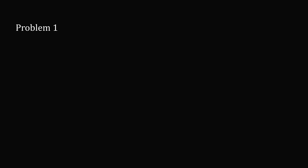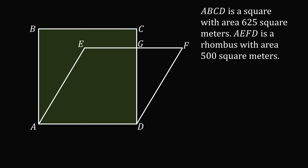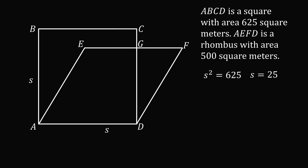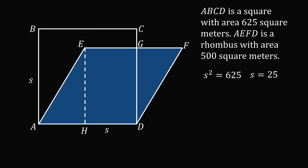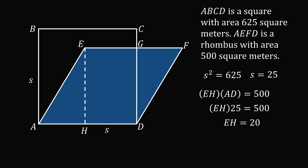Let's solve Problem 1. Suppose the square ABCD has a side length equal to S. So AD = AB = BC = CD = S. Then S squared equals 625, meaning S equals 25. In the rhombus, construct the height EH upon the side AD. The area of the rhombus equals EH times AD, which equals 500. But AD is a side length of the square, so it's equal to 25. So EH times 25 equals 500, and EH equals 20.